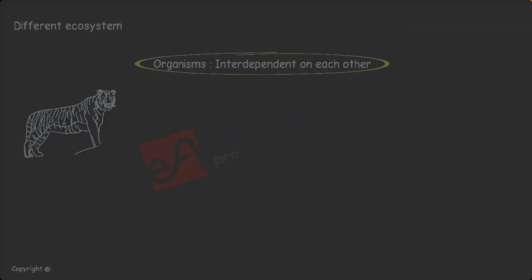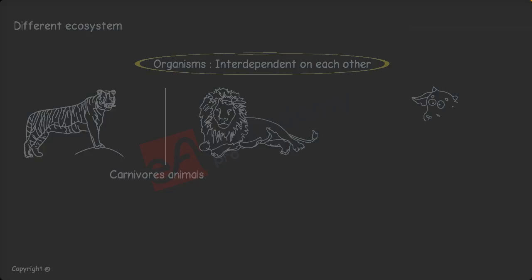Some animals like tiger, lion don't eat plants. These animals are called as carnivores. They eat flesh of other animals.